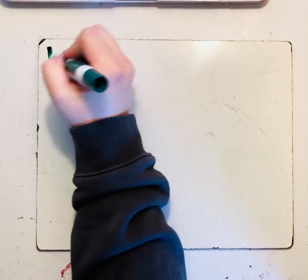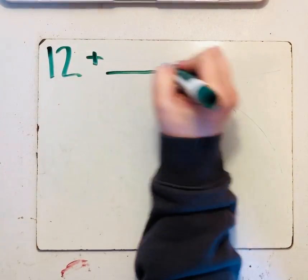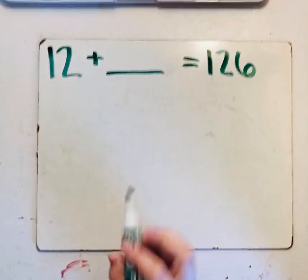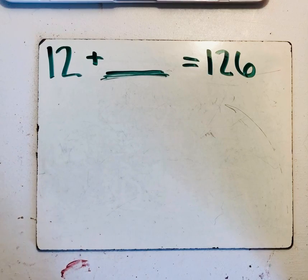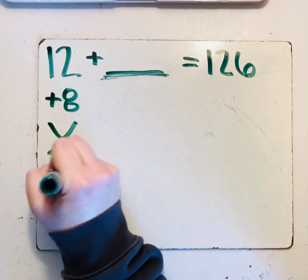Now for the hard question of the day. There are 12 ducks in the pond. Some join them. Then there are 126 ducks. How many join them? What can we add to 12 to get to a friendly number? We can add 8 to get to 20.